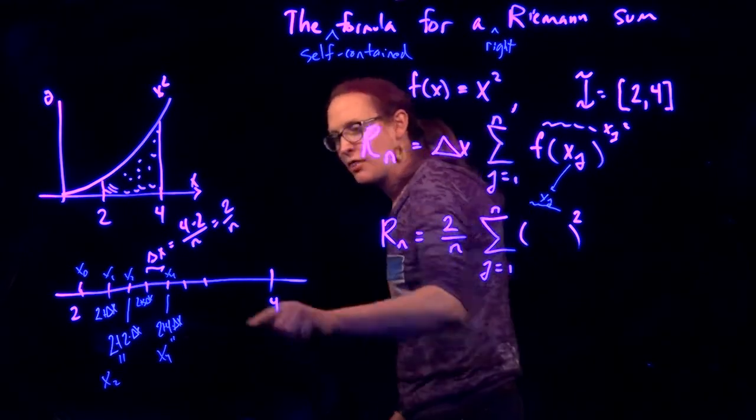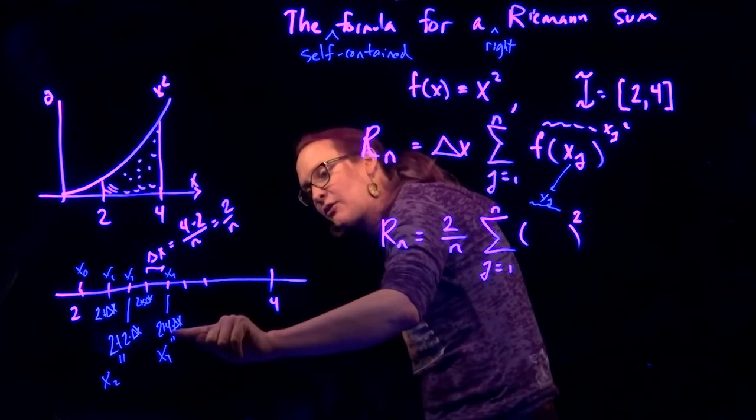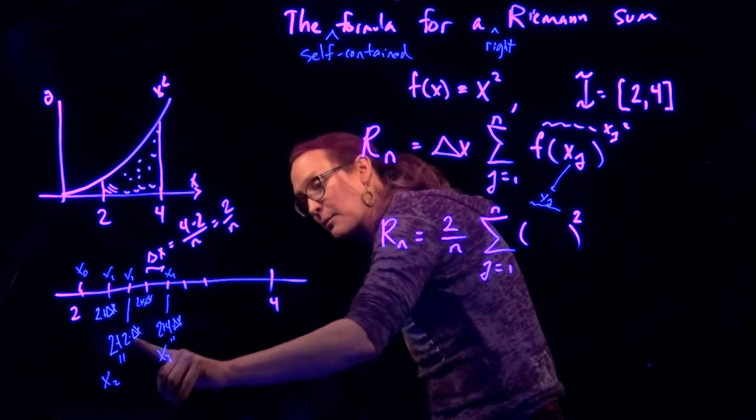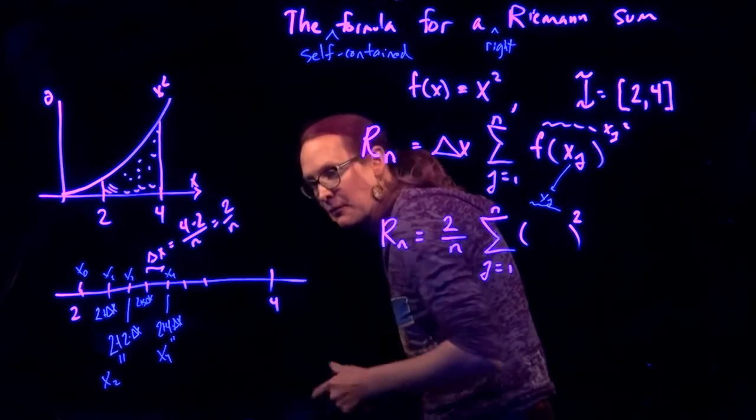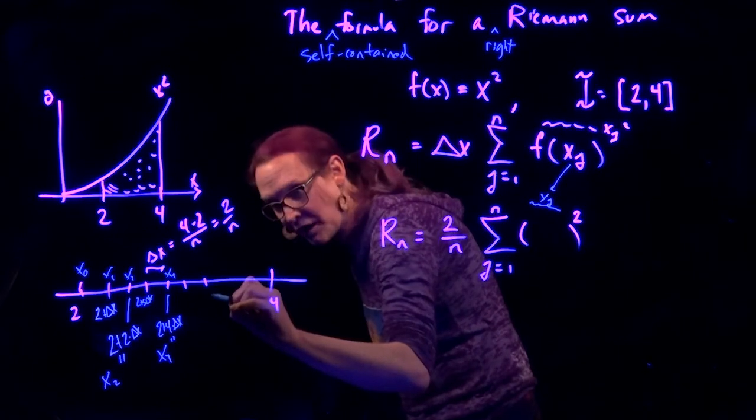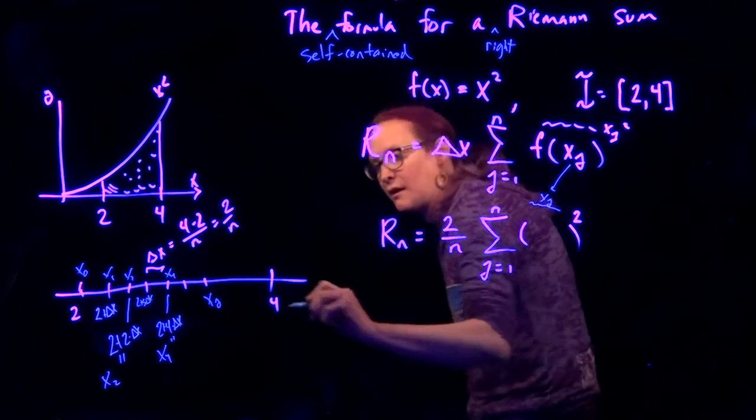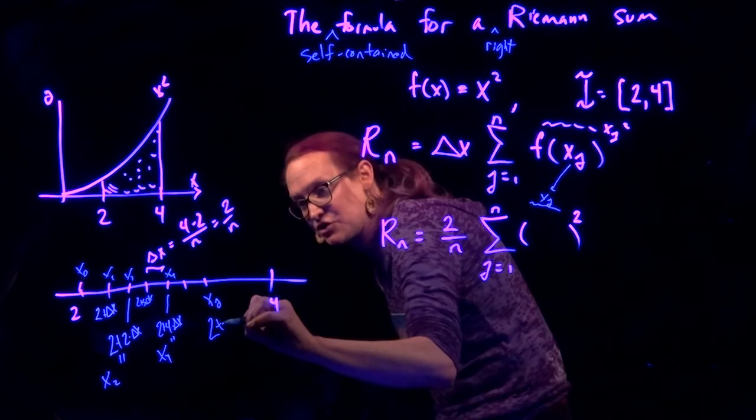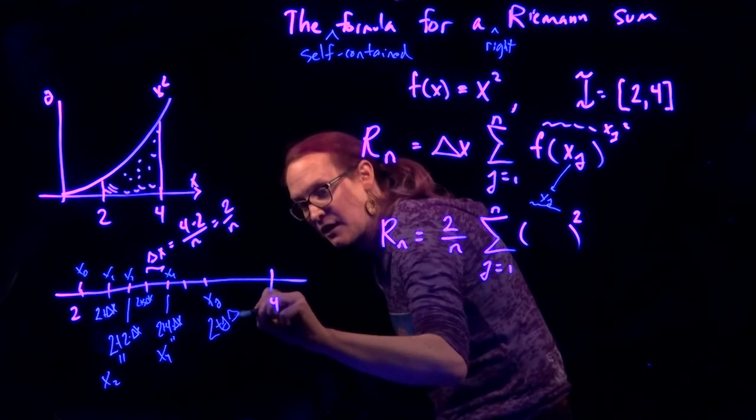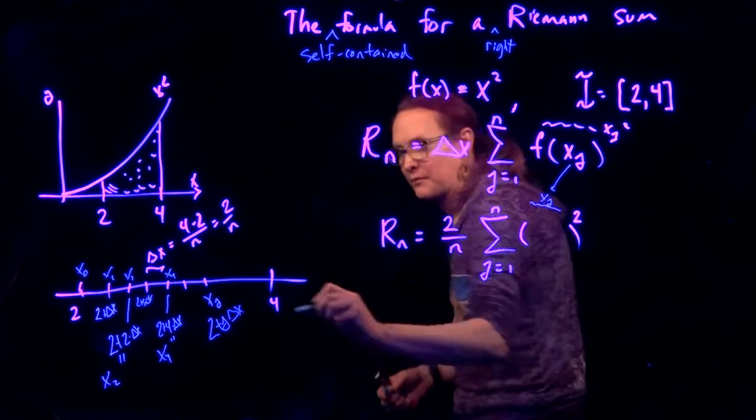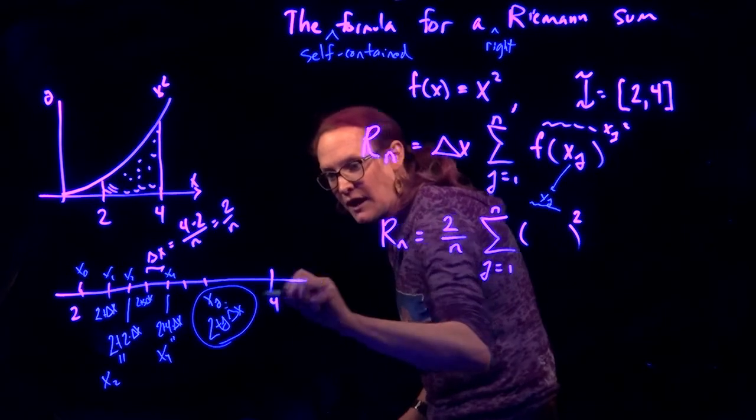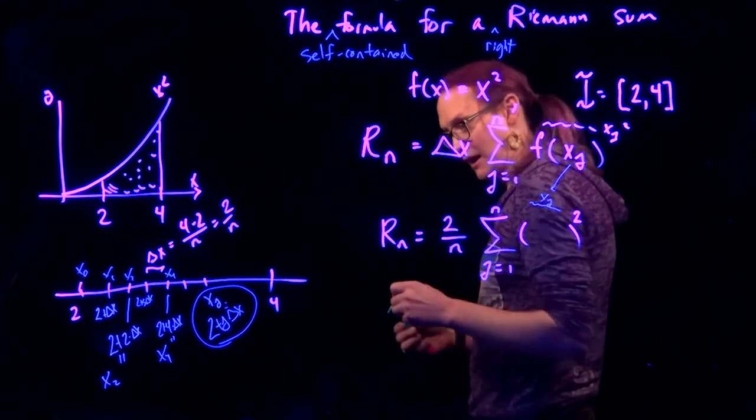So check it out. The number that's in front of delta x is the subscript, which means that the generic jth one, this is x sub j, can be expressed as 2 plus j times delta x.